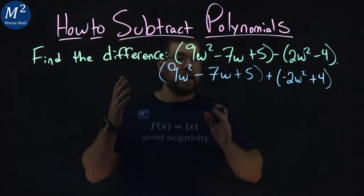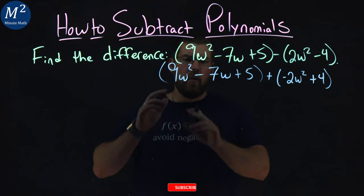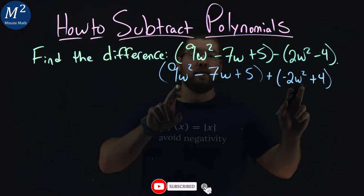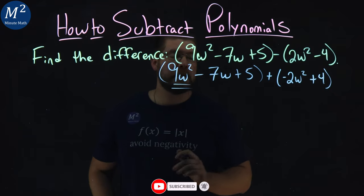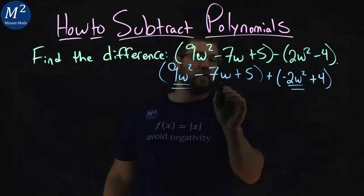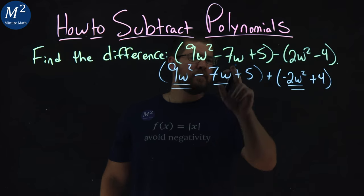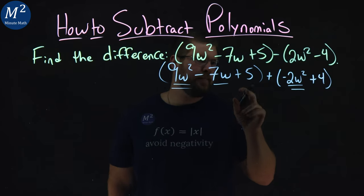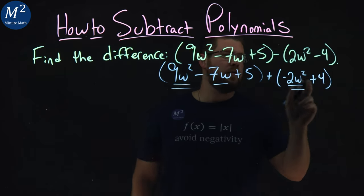Now we want to identify our like terms. We have a w squared here and a w squared. Let's put two lines underneath it. Then we have a single w, none on this side, so we just put one line here. Remember, it's the first power. Let's put one line, and then our like terms of just 5 and 4 stay blank.